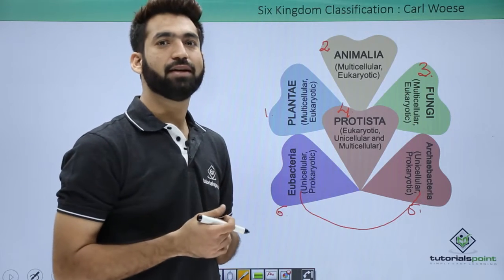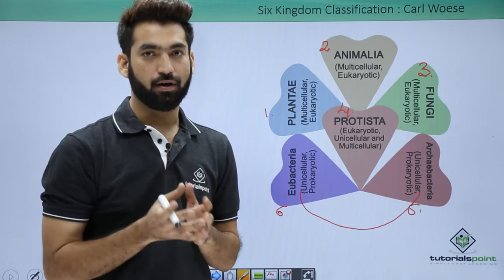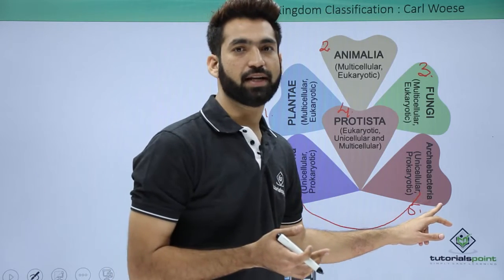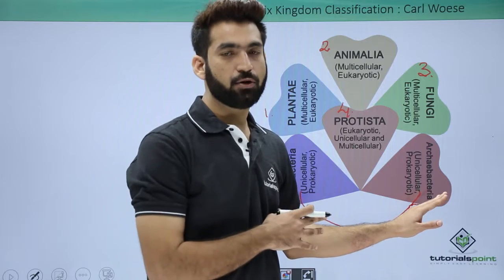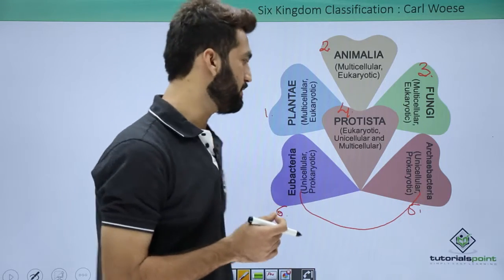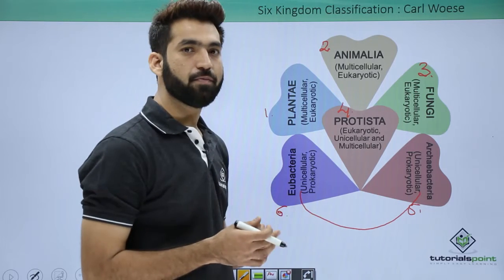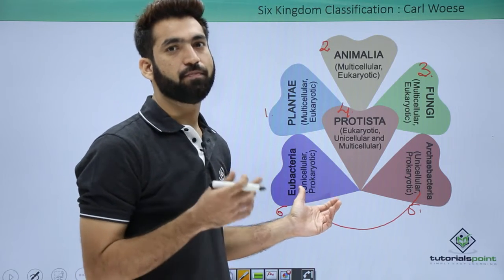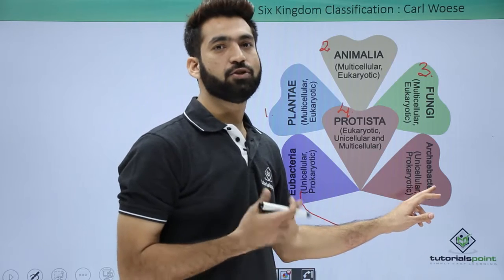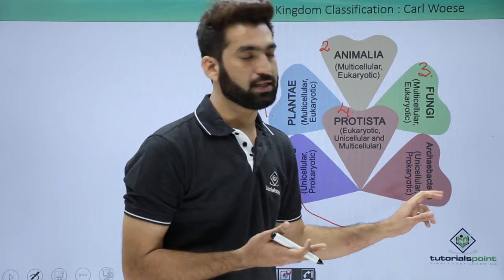The true bacteria are those where the cell wall is made up of peptidoglycan. Archaebacteria don't have a peptidoglycan cell wall — that doesn't mean they don't have a cell wall; they do have a cell wall, but it is not made up of peptidoglycans. This is the major difference between Archaebacteria and Eubacteria: Eubacteria are the true bacteria with peptidoglycan in their cell wall, while Archaebacteria lack it.